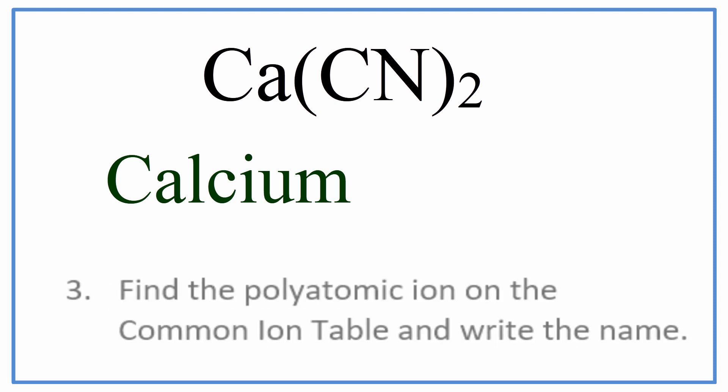Then, we need to name that polyatomic ion, the CN. Since it's a polyatomic ion, we need to look it up in a common ion table, usually provided to you. And for CN, it's called the cyanide ion.